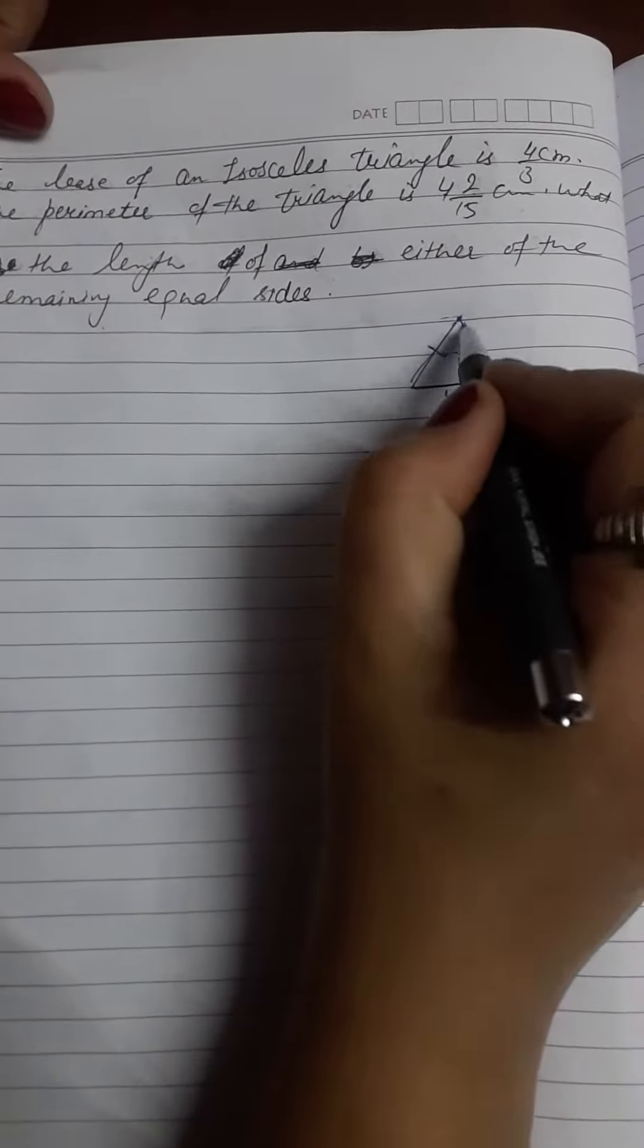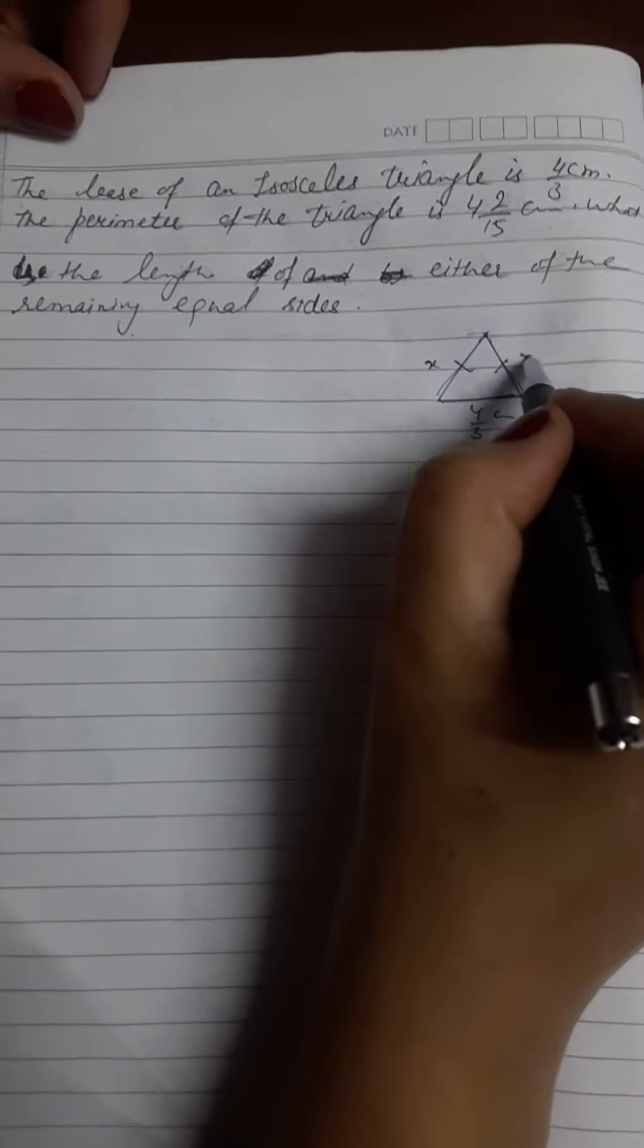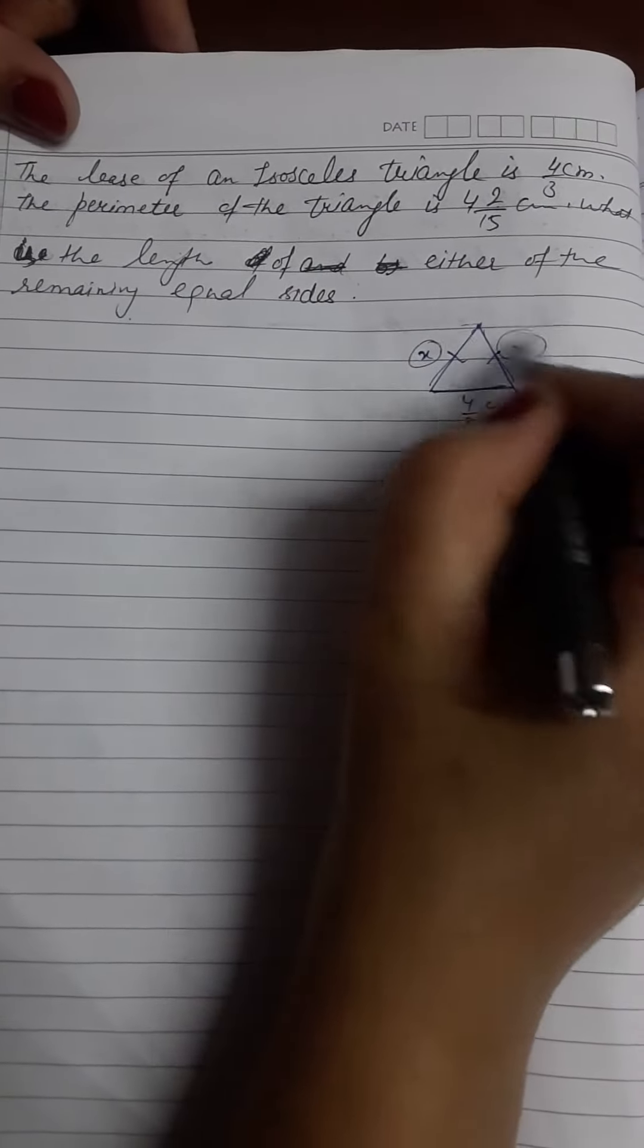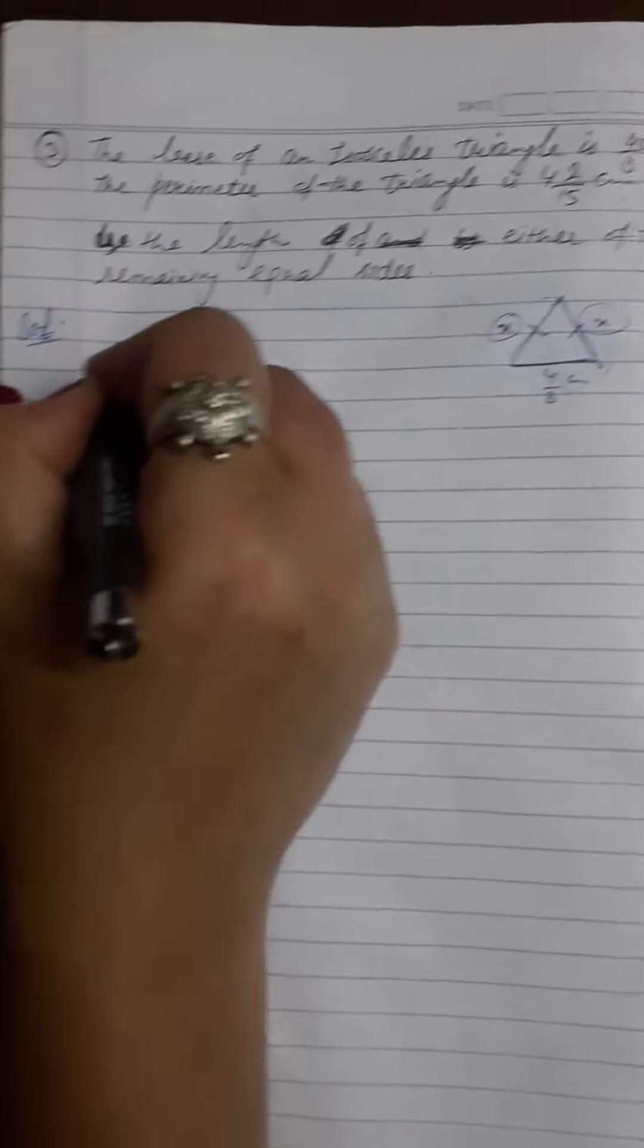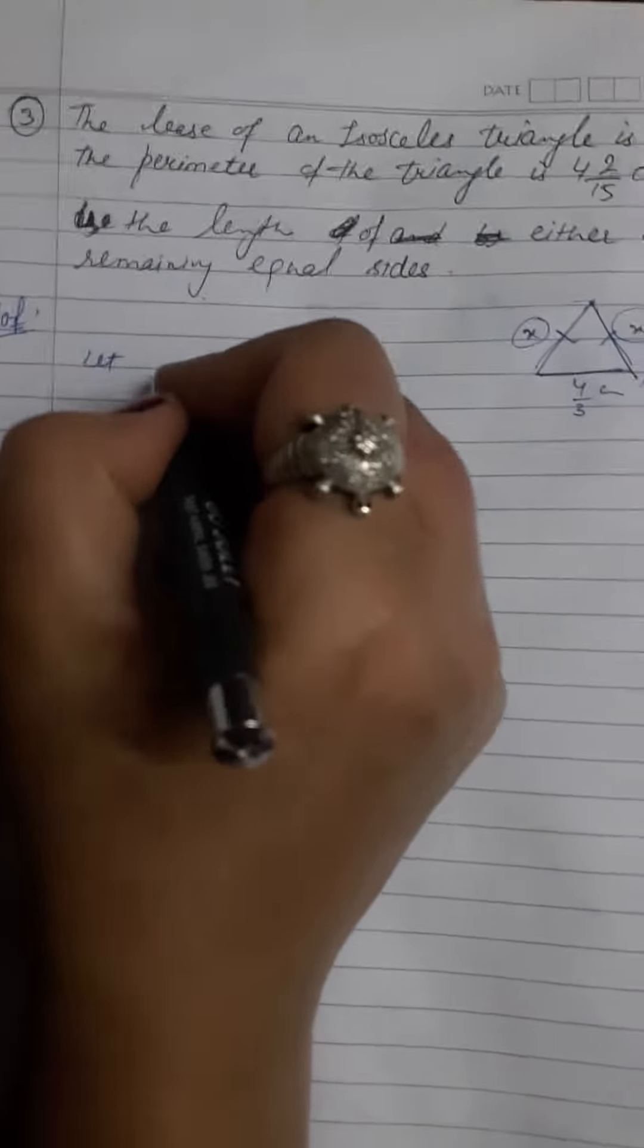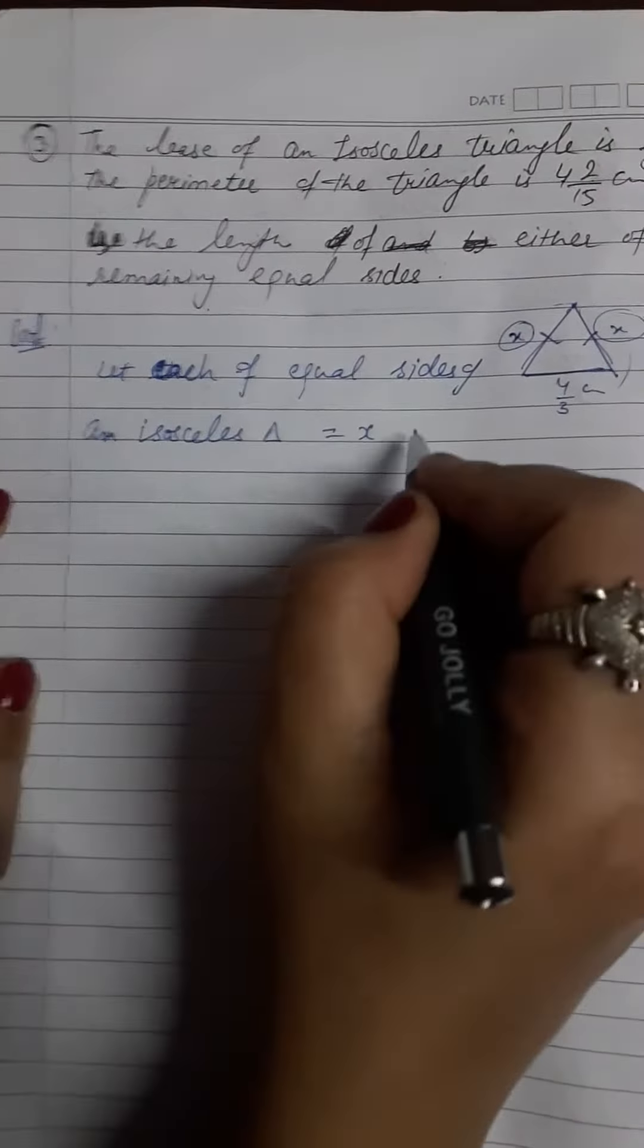So let's assume the equal sides of the isosceles triangle are x. So this is x cm.